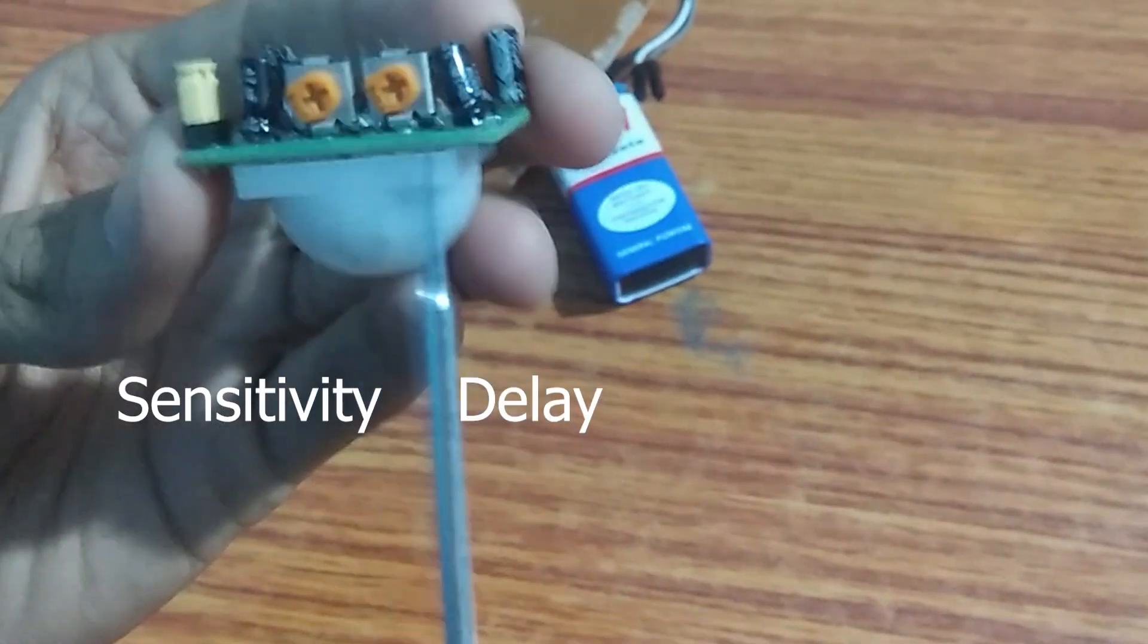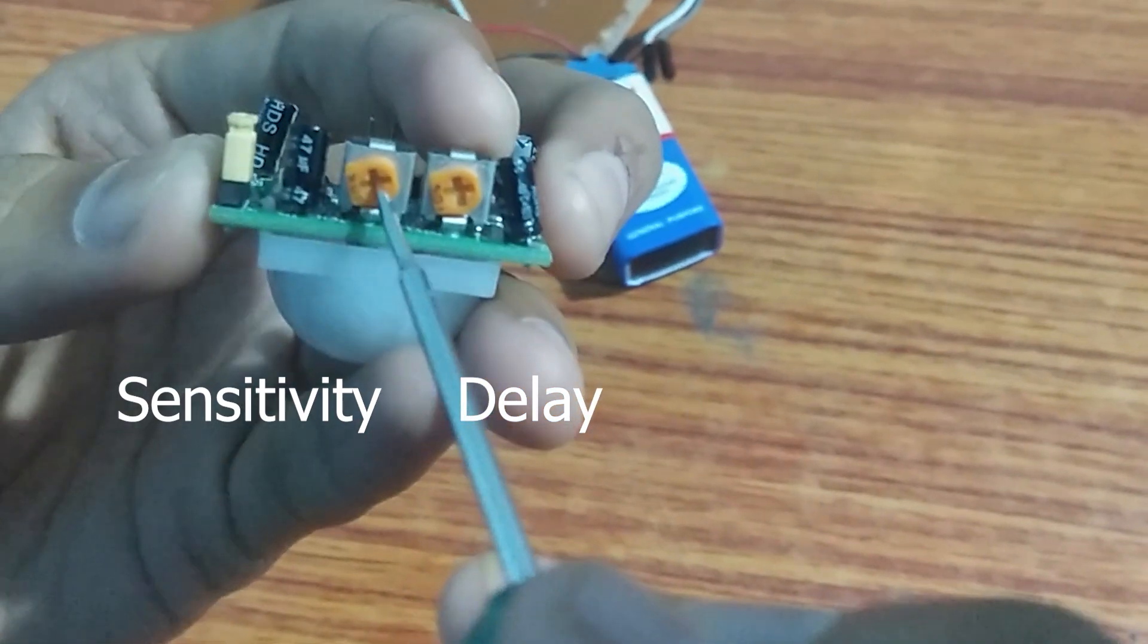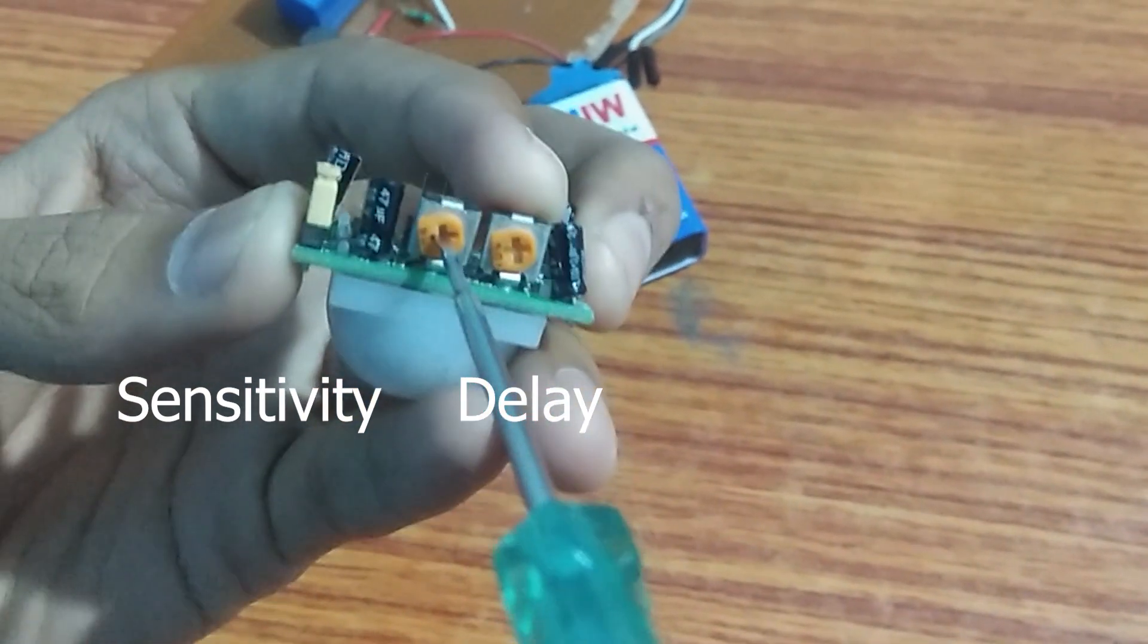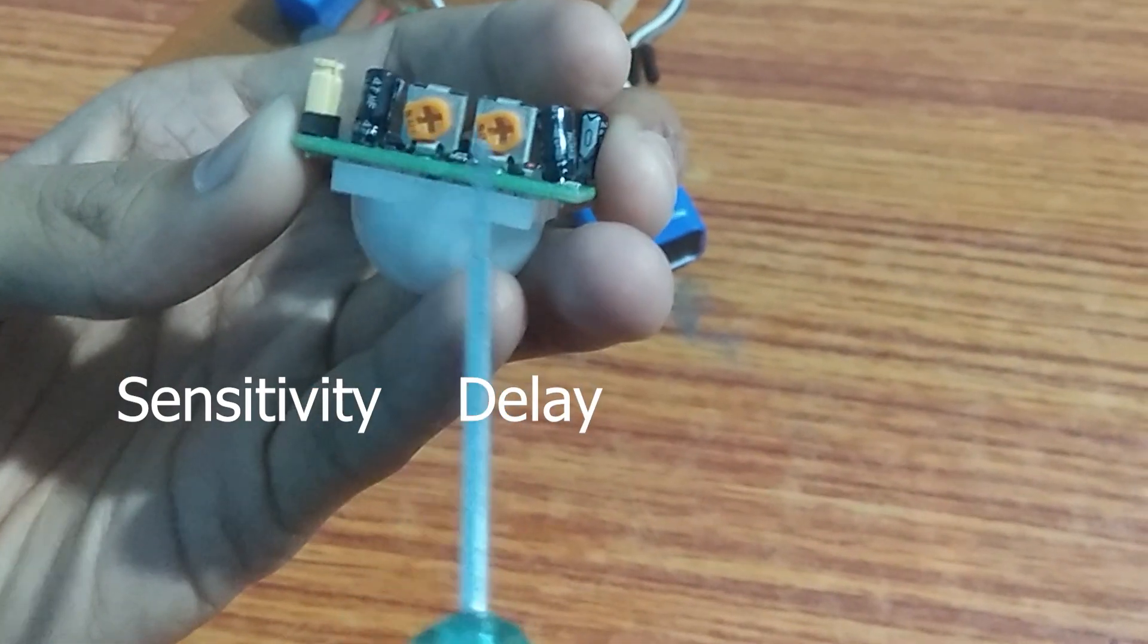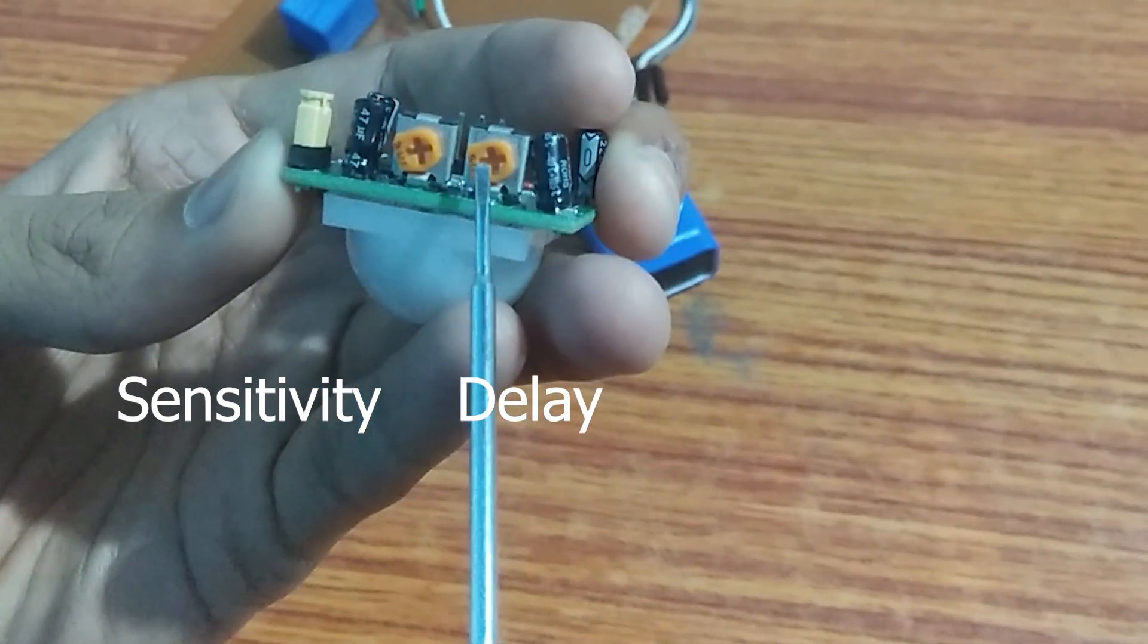The detector has two potentiometers. One is used to control the sensitivity of the detector or range—it can detect up to 7 meters. Another port is for delay timing, used to set the turn-on time of the output. You can vary it from 5 seconds to 200 seconds.